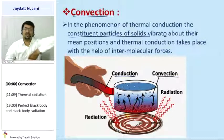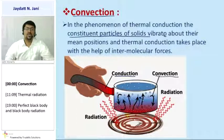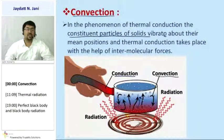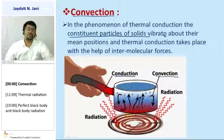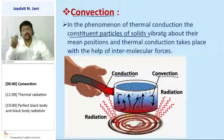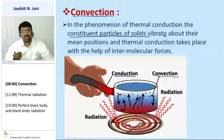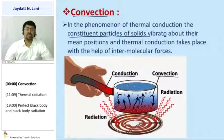In convection, there are two types: natural convection and forced convection. For natural convection, a simple example is near a sea area — the sand near the seashore gets heated by sunlight. The air near the sand also heats up. Due to high temperature, pressure is created. Low temperature air comes down and high temperature air goes up. This is called natural heat convection.